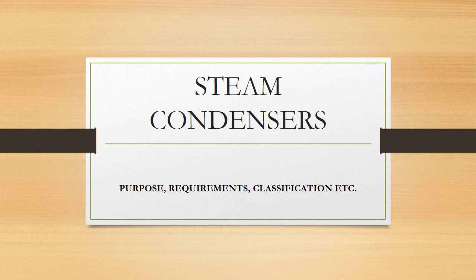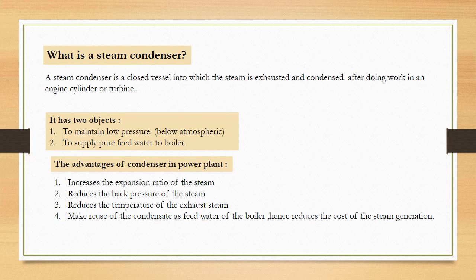In this video, we will review condenser. A steam condenser is a closed vessel into which the steam is exhausted and condensed after doing work in an engine or turbine. It has two objects: to maintain low pressure and second one is to supply pure feed water to boiler.